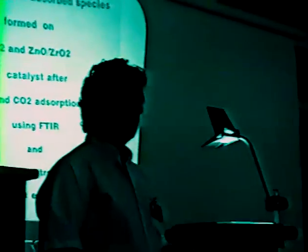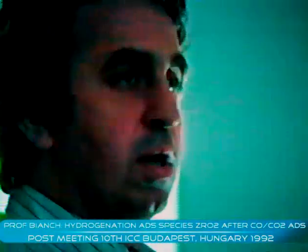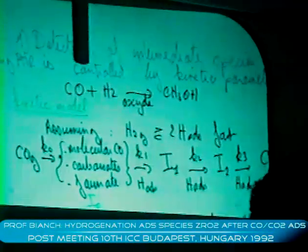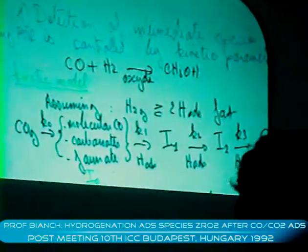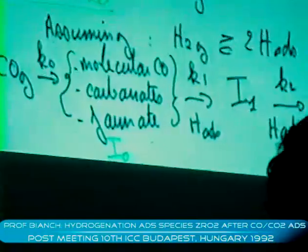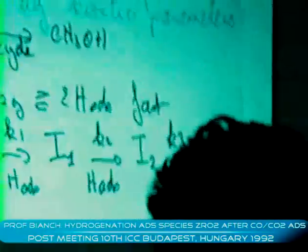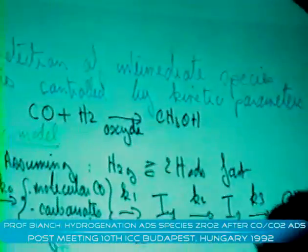A lot of people have talked about intermediate species. What we can obtain from FTIR studies is what kind of intermediate species we can record and detect. What we can record by FTIR is mainly controlled by kinetics. This means if we assume some path for the methanol synthesis, what we have is adsorption of CO under various forms, like molecular carbonate or formate species according to the literature.